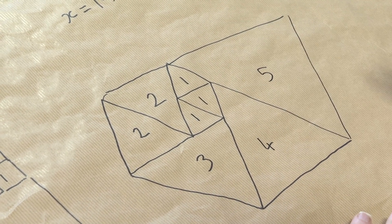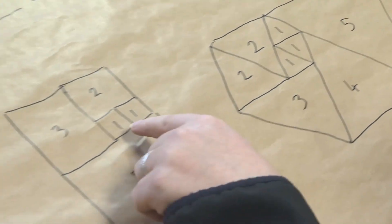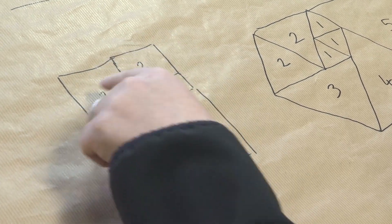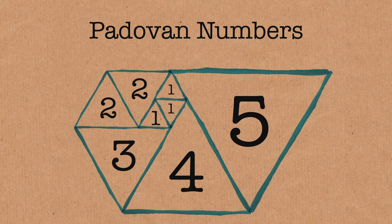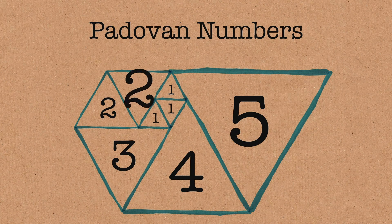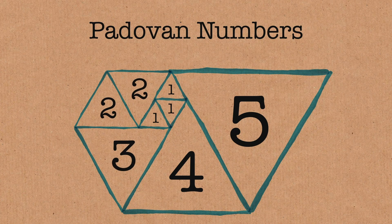So we get, instead of the Fibonacci numbers, one, one, two, three, five, we get what are called the Padovan numbers, which are one, one, one, two, two, three, four, five.